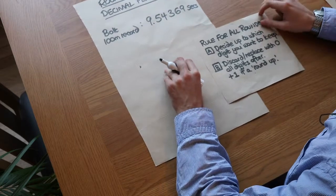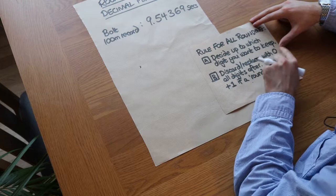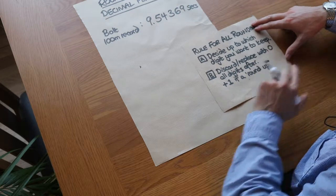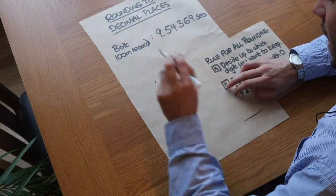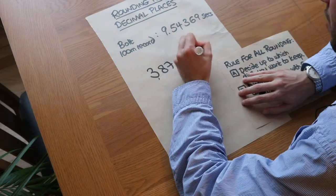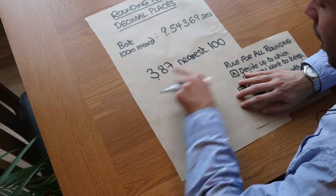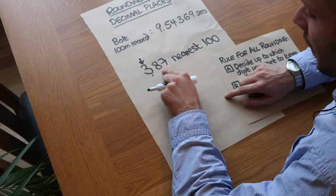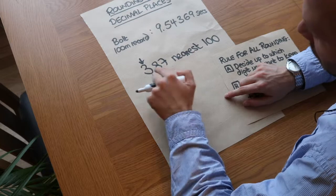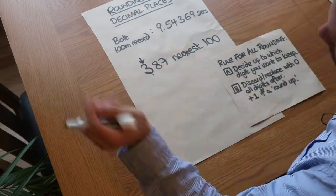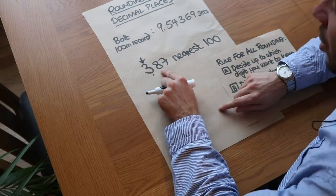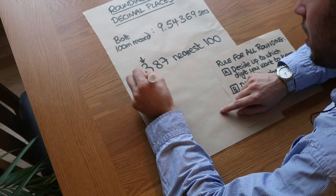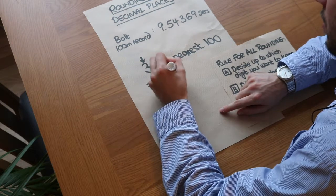As we saw in the previous video, when we want to round we decide up to which digit we want to keep — whether rounding to the nearest 10 or 100 — and then discard everything after, replacing with zero. So if we wanted 387 to the nearest 100, we keep everything up to the hundreds digit and discard after. We replace the eight tens and seven units with zeros. But we first check the digit after the hundreds digit — is it greater or equal to five? Yes, so that three goes up to four, giving 400.